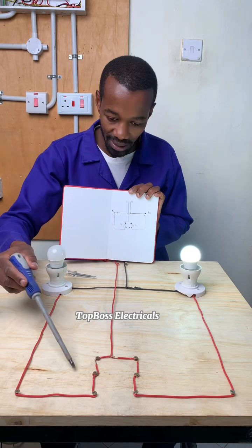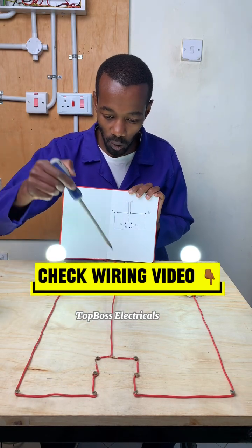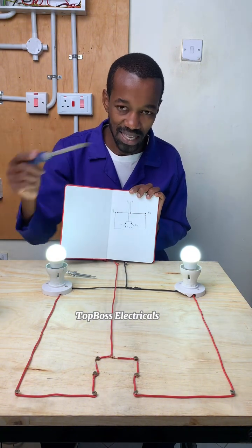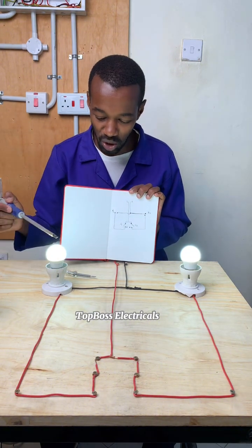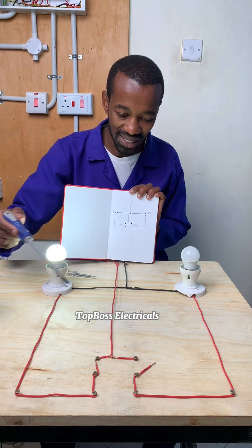If you connect it back, current flows and you have a complete circuit. If you close this circuit, this bulb lights up. It does not in any way affect this one.